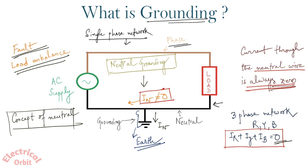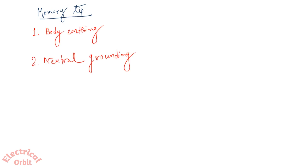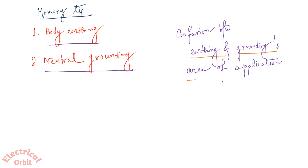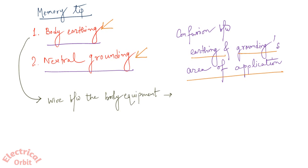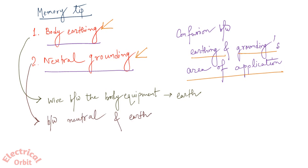This particular procedure is called neutral grounding. So the word grounding is associated with connecting neutral to earth. Here I am giving you a memory tip: just consider two words — one is body earthing and another is neutral grounding. If you have any confusion between earthing and grounding's area of application, just think about these two expressions. For earthing you have to connect a wire between the body of the equipment to earth, and for grounding you have to connect a wire or any connector between the neutral and the earth.